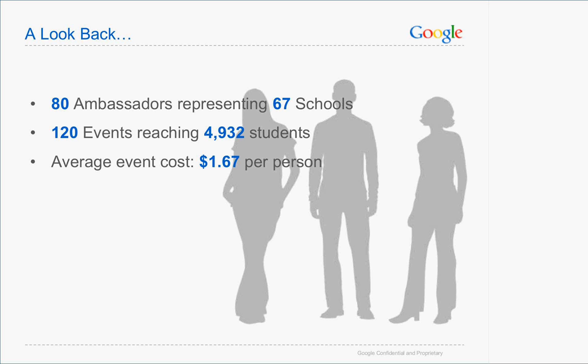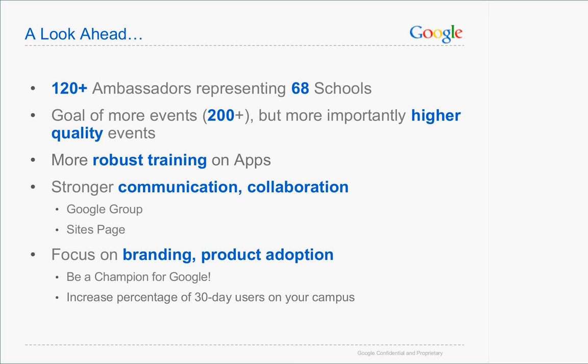Be creative is the main point. This year the program has grown significantly — we have over 120 ambassadors representing 68 schools. We have a goal of more events but higher quality events. We're also focusing on training on Google Apps. We're making efforts to really increase communications with virtual trainings, and we will be creating a Google group and the ambassador sites page.